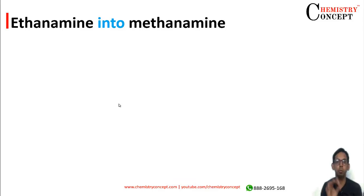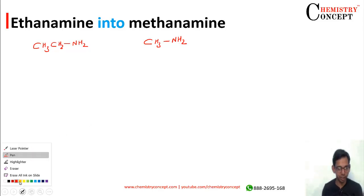Ethanamine into Methanamine - how to convert? Ethanamine is CH3CH2NH2 and we need to convert this into Methanamine, which is CH3NH2. We need to decrease the carbon. Now this is not a very difficult thing.